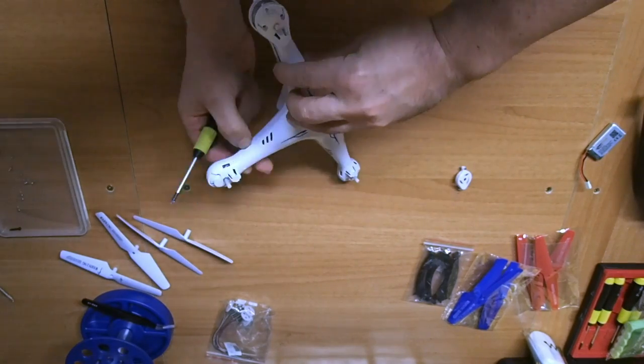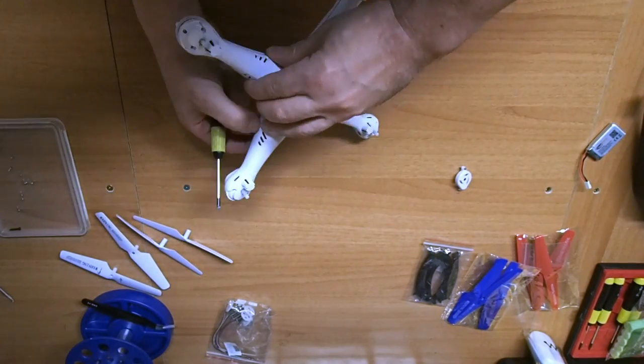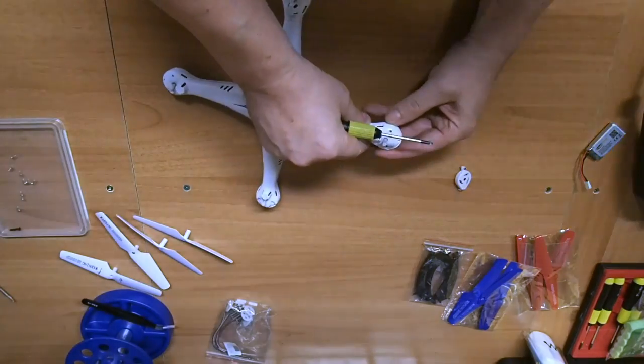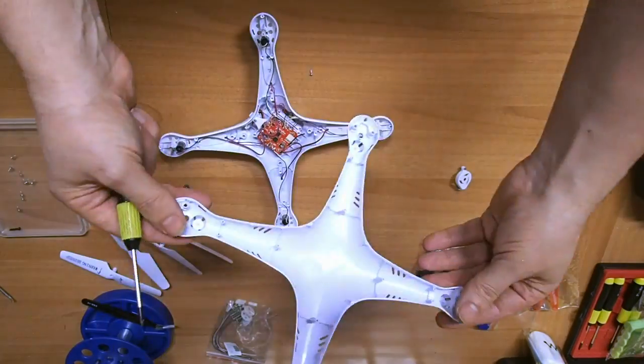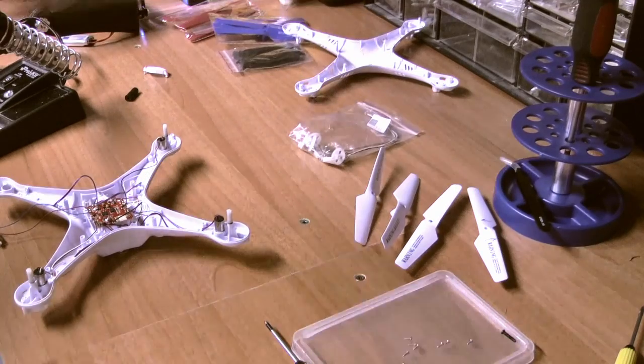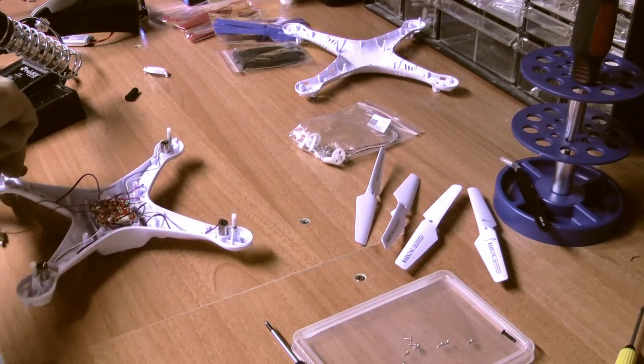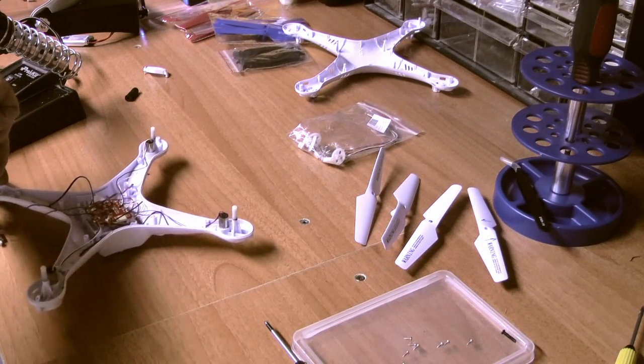You can see I have only two motor bumpers left; the rest were broken by aggressive flying. The top part of the body is now removed, and let's remove the motor.